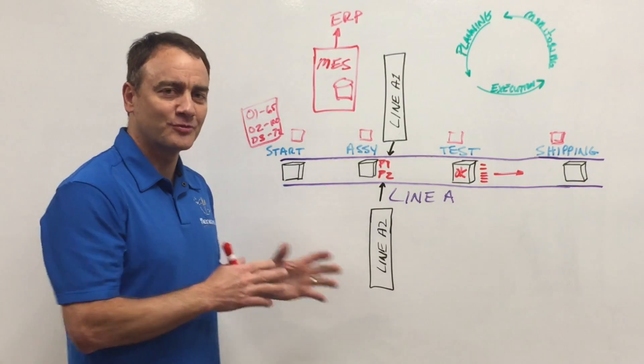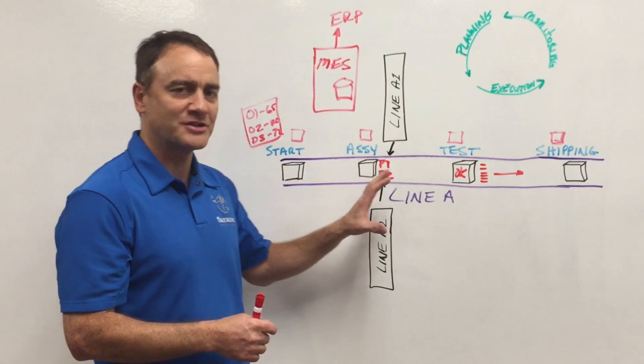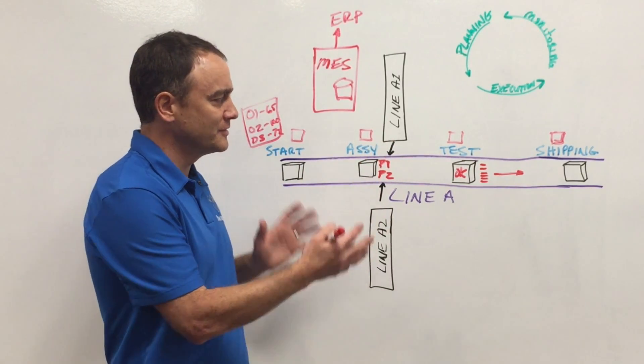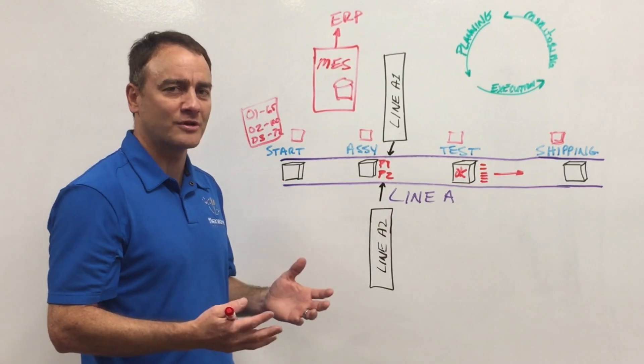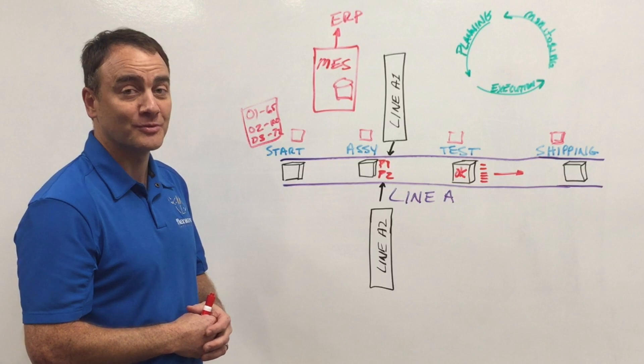So again, just to recap, this is really what FlexWare was started for in 1996 was to implement these manufacturing execution systems. So that's just a brief overview of in the red really of how an MES system works, how it implements on a shop floor. And this is what we love helping our customers with.